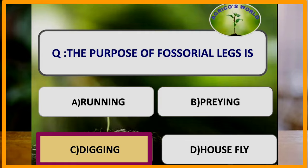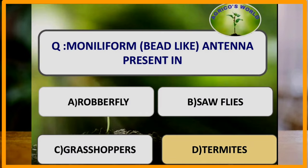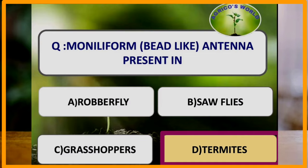Natatorial legs are present in water bugs. The purpose of fossorial legs: fossorial leg modification is the modification of front legs found in mole crickets and dung rollers for the purpose of digging. In fossorial legs, the tibia and tarsi are short and broad with tooth-like projections useful for digging. Moniliform, that is bead-like antennae, are present in termites. In moniliform antennae, the segments are round or oval with well-developed constrictions between segments, appearing like a string of beads.